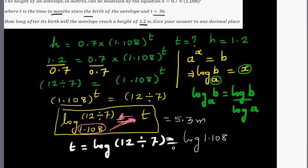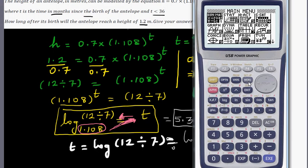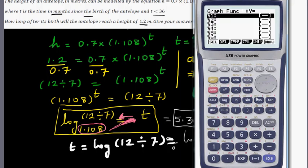After 5 months or 5.3 months, the antelope will attain the height of 1.2 meters. So you can also do this on a calculator to understand this graphically. Go to graph and type in the equation, which is 0.7 times 1.108 raised to x.